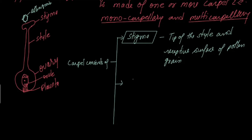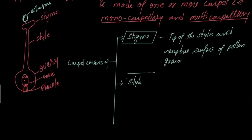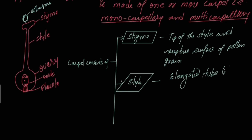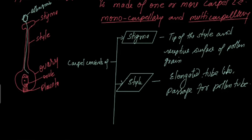The second part is the style. It is elongated — long and tube-like — serving as a passage for the pollen tube. The pollen that has landed on the stigma sends out a tube which travels down through the style.